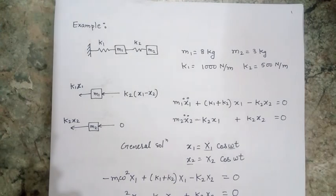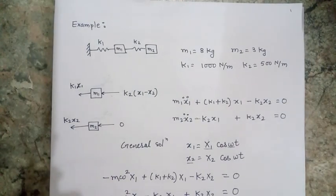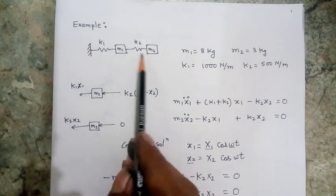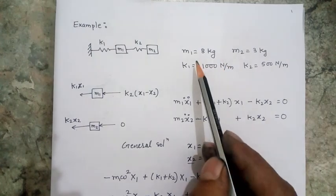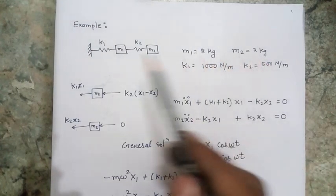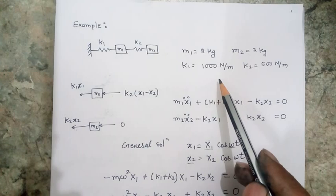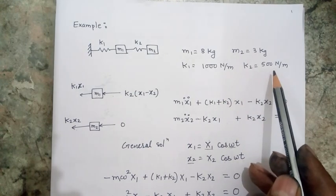To understand the problem of a 2-degree-of-freedom system, let's solve a simple problem. In my problem, I have considered two masses m1 and m2 of magnitude 8 kg and 3 kg, and two spring elements of stiffness 1000 N/m and 500 N/m.